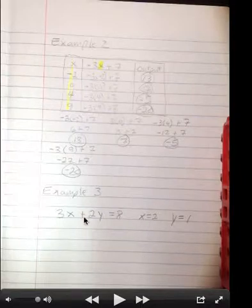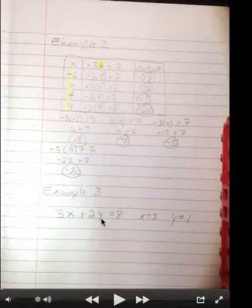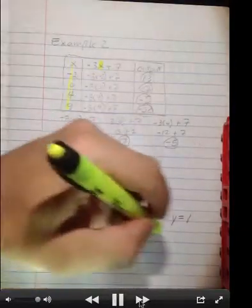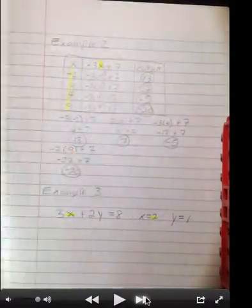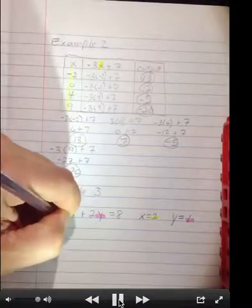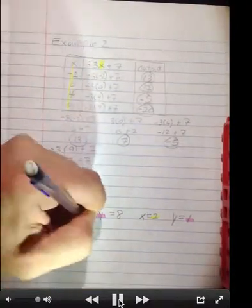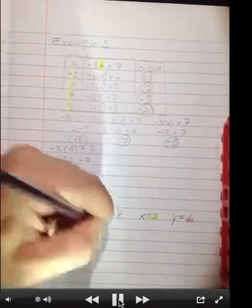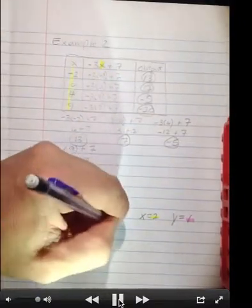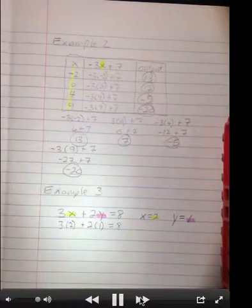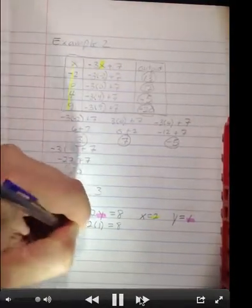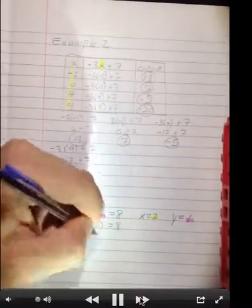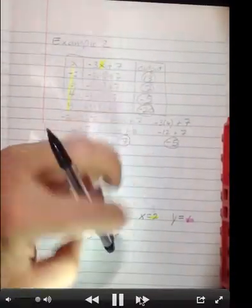So we're going to replace this x with that value, this y with that value, and see if that remains true, see if that does equal 8. I've highlighted the x in yellow and the y in pink. So 3 times 2 plus 2 times 1 is 6 plus 2, that's equal to 8. Since 8 does equal 8, that's a true statement.